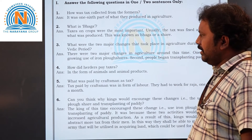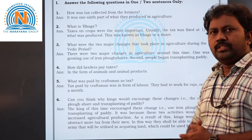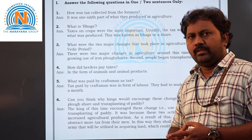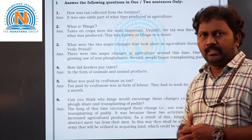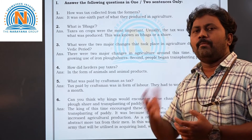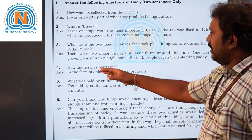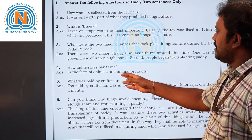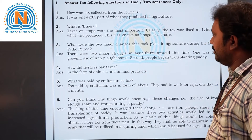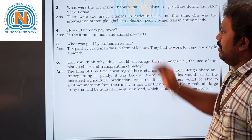Fourth question: how did herders pay taxes? Herders are those who herd or tend animals. They paid taxes in the form of animals and animal products.